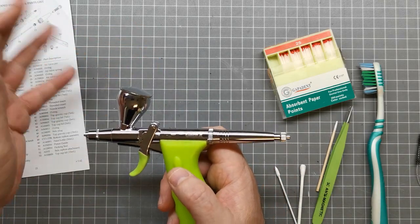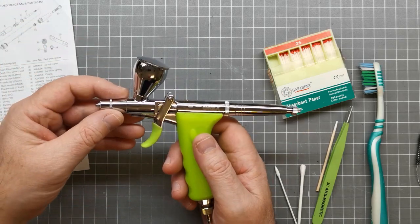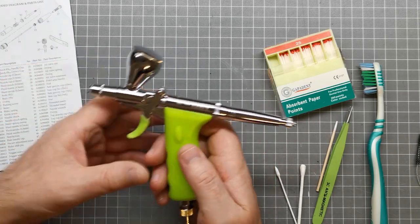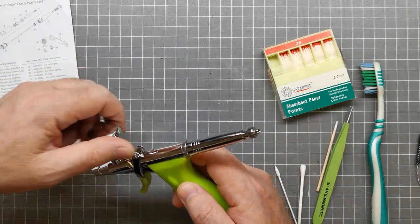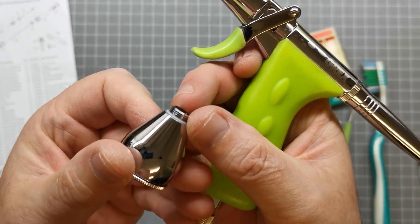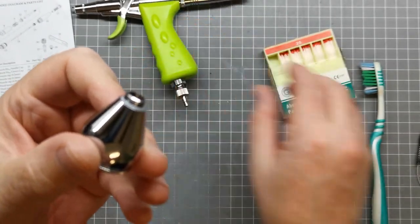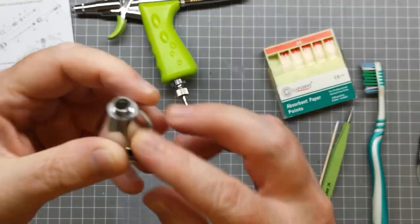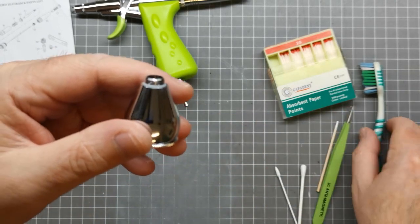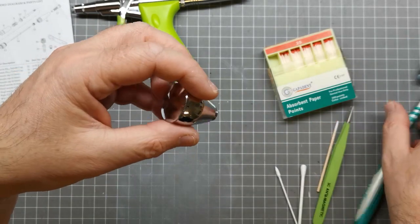If I've done a session of airbrushing, I'll always give it a really good clean. Some people just rinse this out, but I will actually do a strip back and clean it properly. The way I go about that is I'll take the cup off. Around this thread, you need to be careful because it traps plenty of paint.